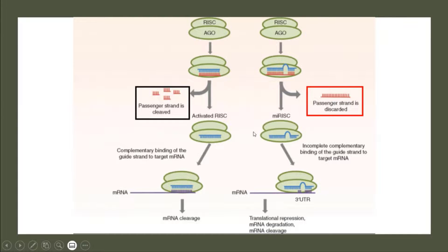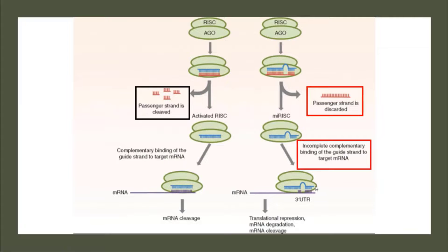Now this complex is active in both situations and they attach themselves to the messenger RNA. As you can see in this picture, due to the presence of this loop, miRNA cannot bind to the mRNA completely. So incomplete complementary binding occurs in miRNA.